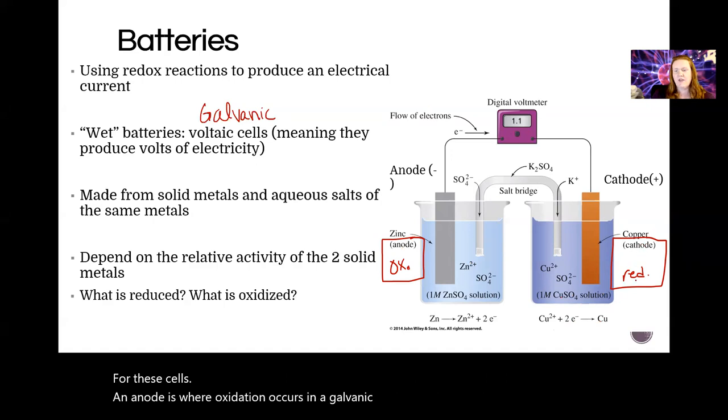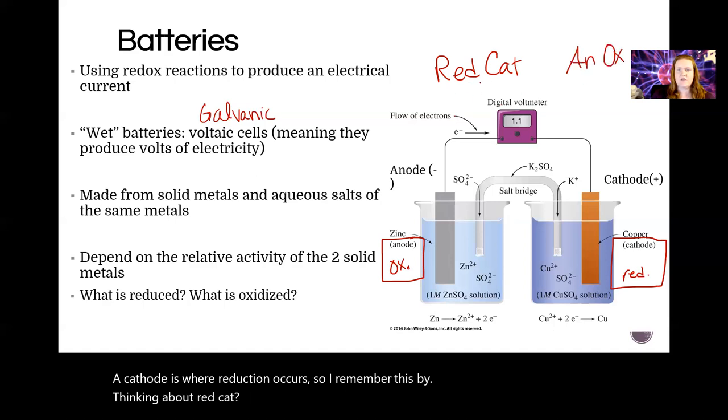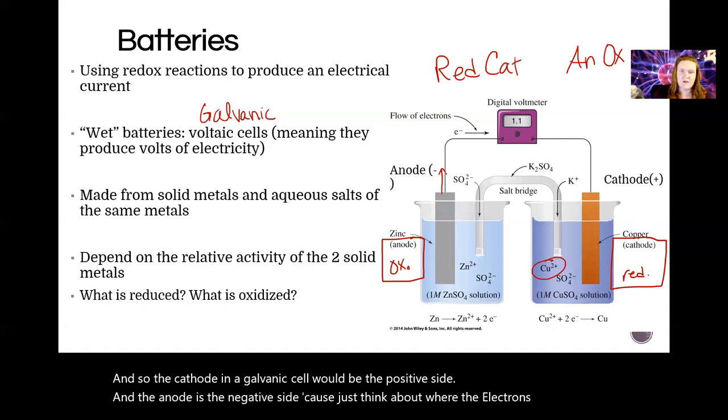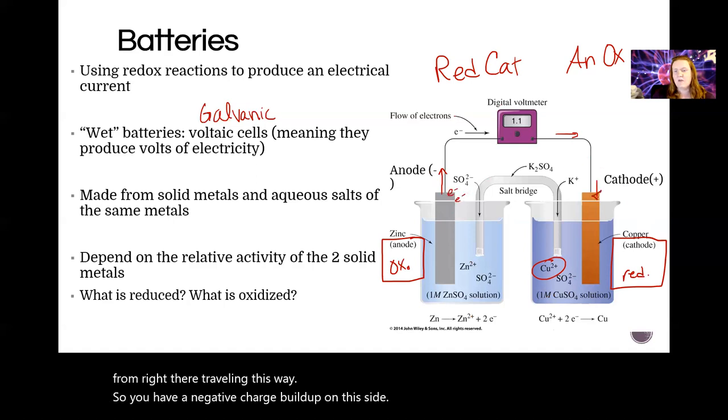So we have names for these cells. An anode is where oxidation occurs in a galvanic cell. A cathode is where reduction occurs. So I remember this by thinking about RED CAT and AN OX, right? So reduction at the cathode, anode is oxidation. So that's how I remember it. And so the cathode in a galvanic cell would be the positive side and the anode is the negative side, because just think about where the electrons are coming from. They're traveling this way so you have a negative charge buildup on this side and they're coming over to here because there's a positive draw.